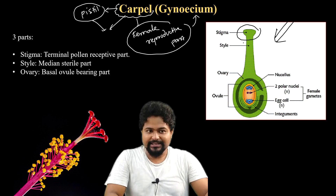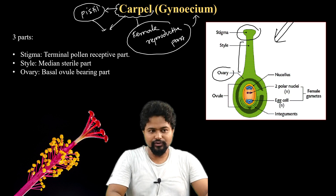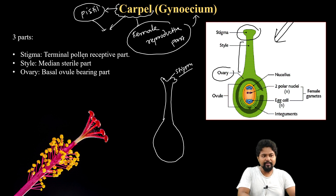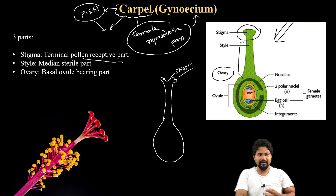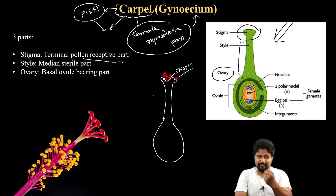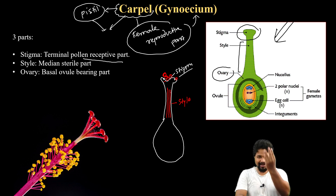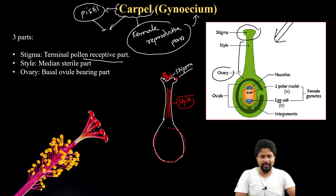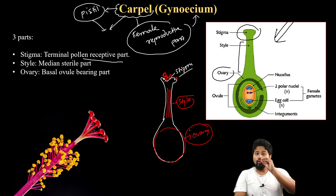The three parts are: stigma, style, and ovary. The stigma is where pollen germinates. The style is the median connecting part, and the ovary is very important because the female gametophyte is located there.